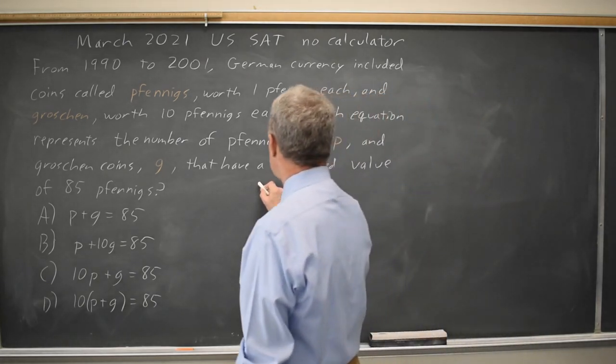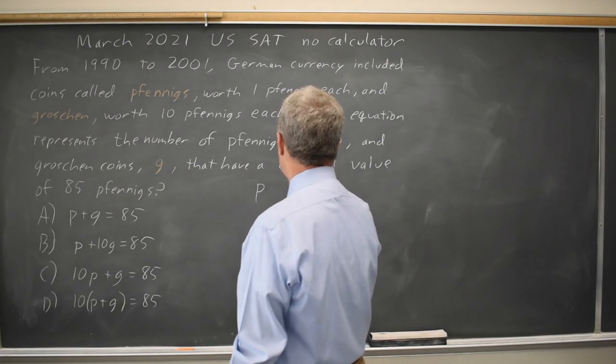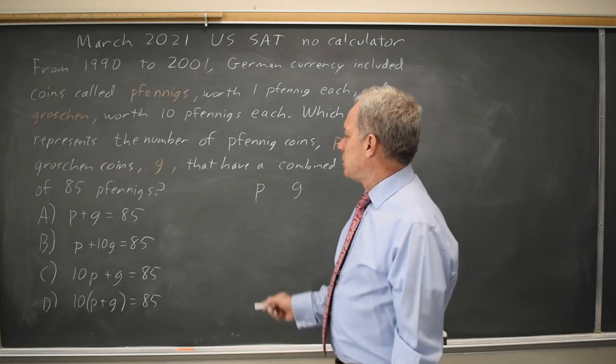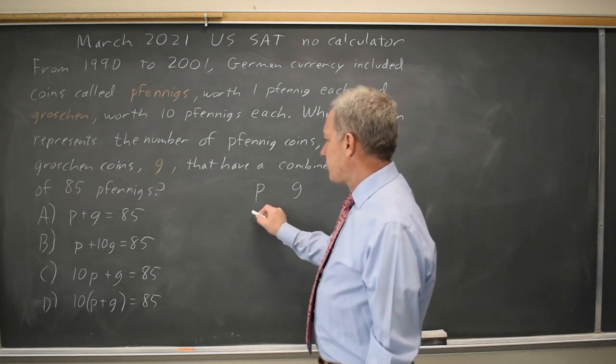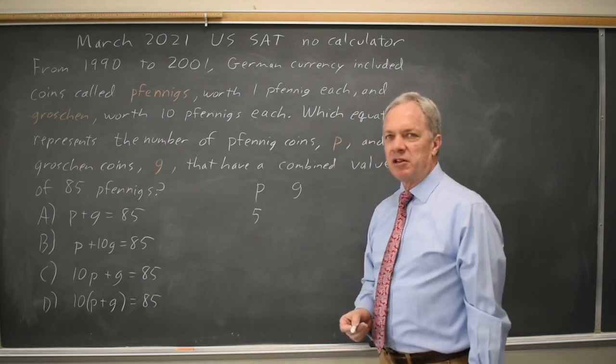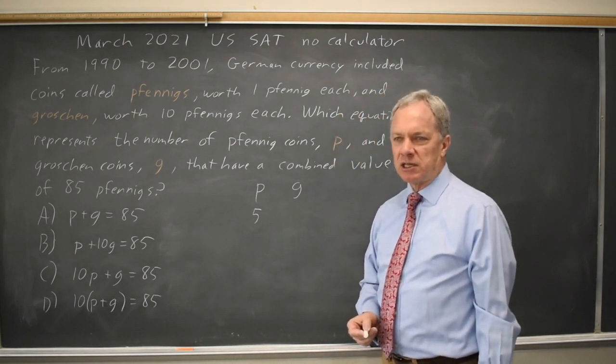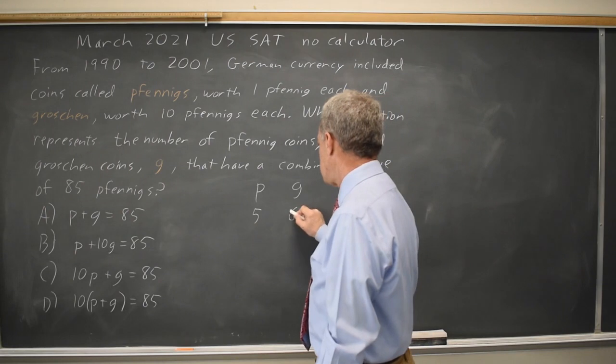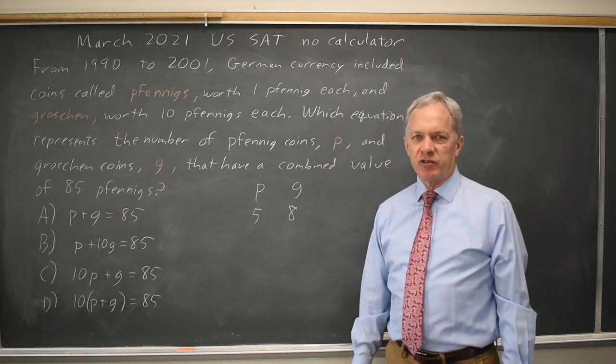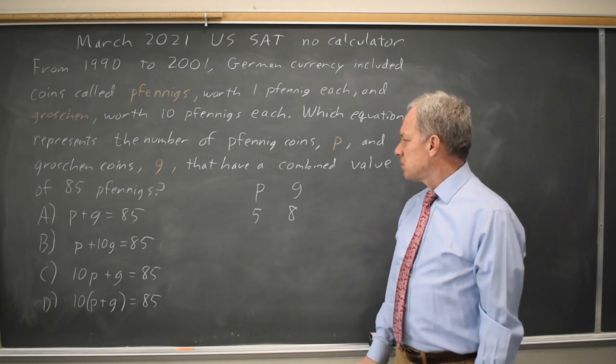One way to approach this is to make up numbers that work. If I have, let's say, 5 Fennigs, I need 80 more in value from Grosian, and each is worth 10. So 8 Grosian would be worth 80 Fennigs plus the 5 individual Fennigs is 85. So this combination works.